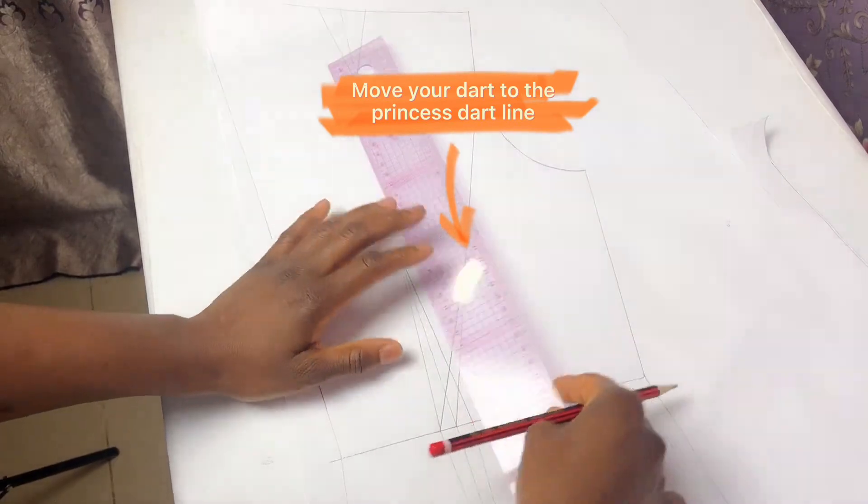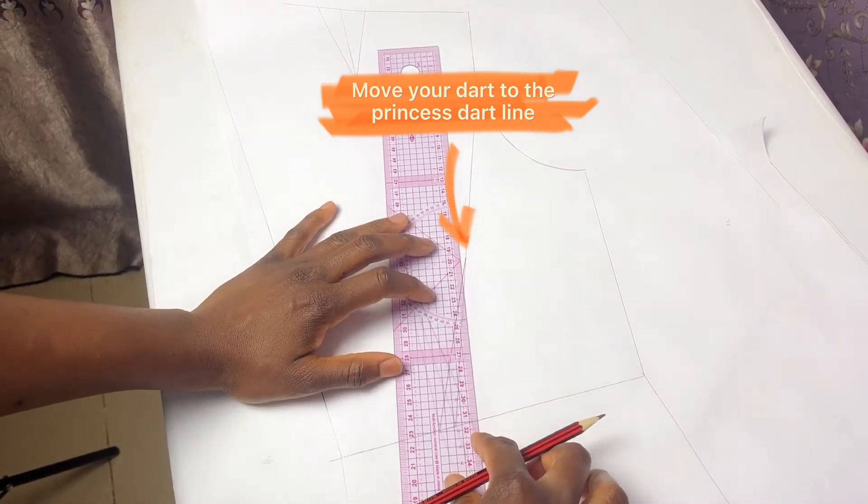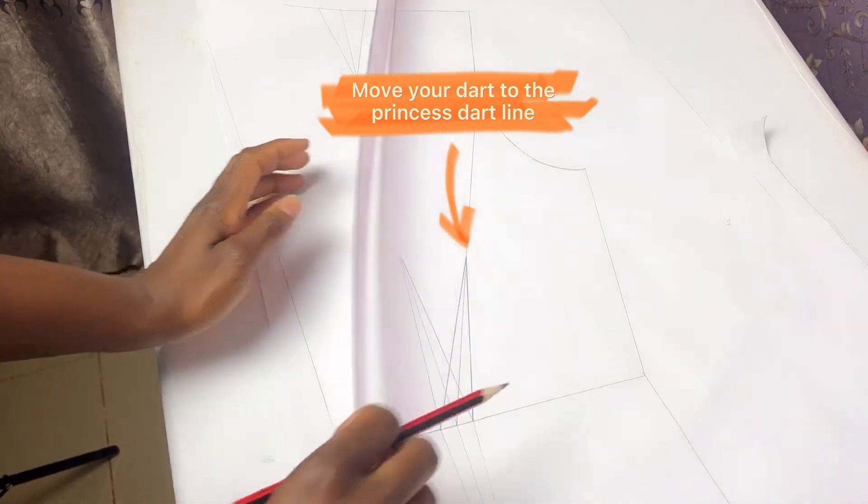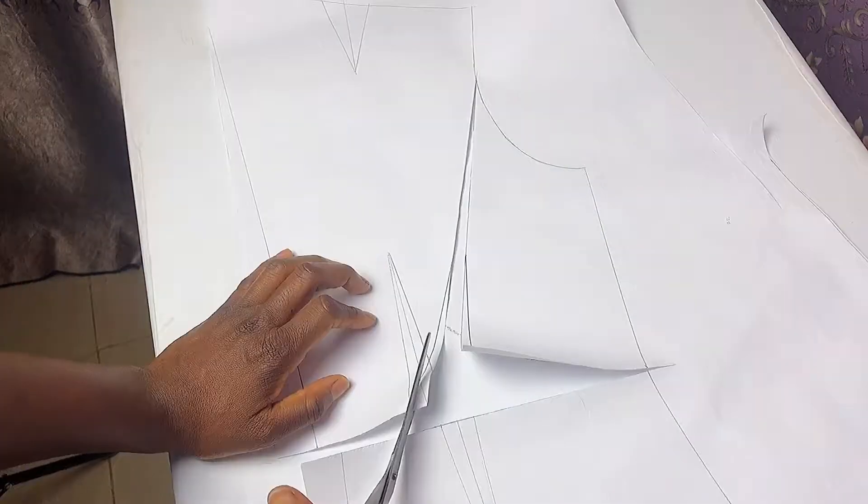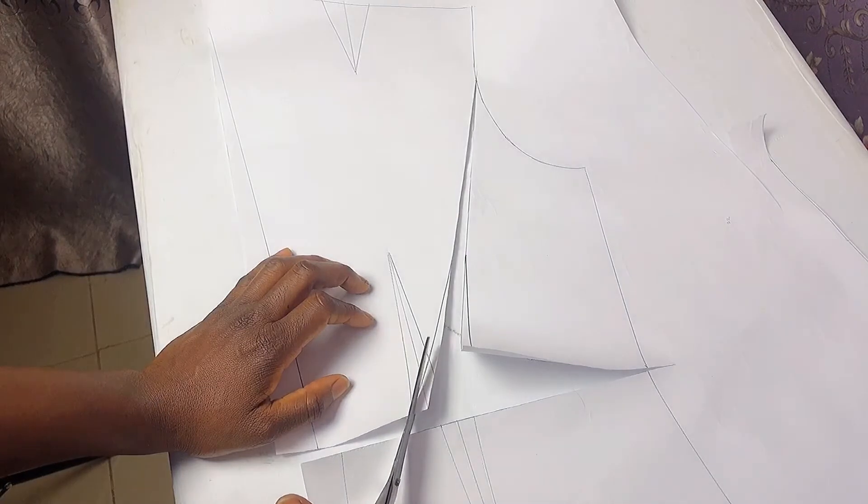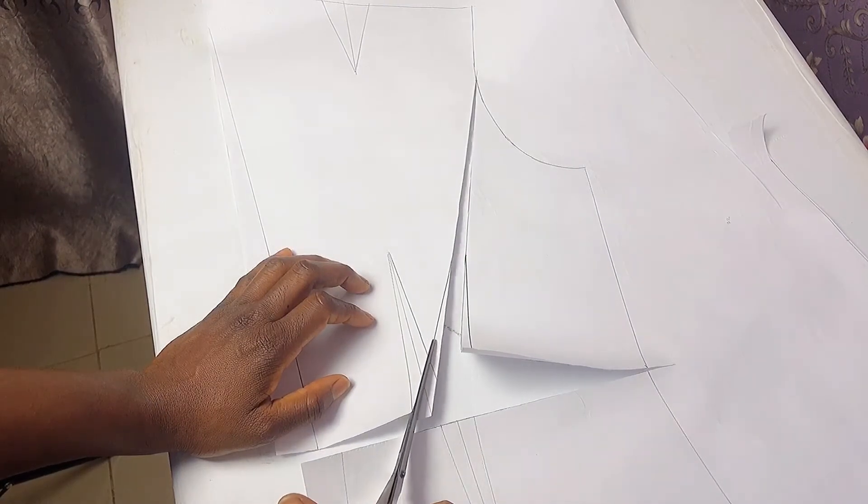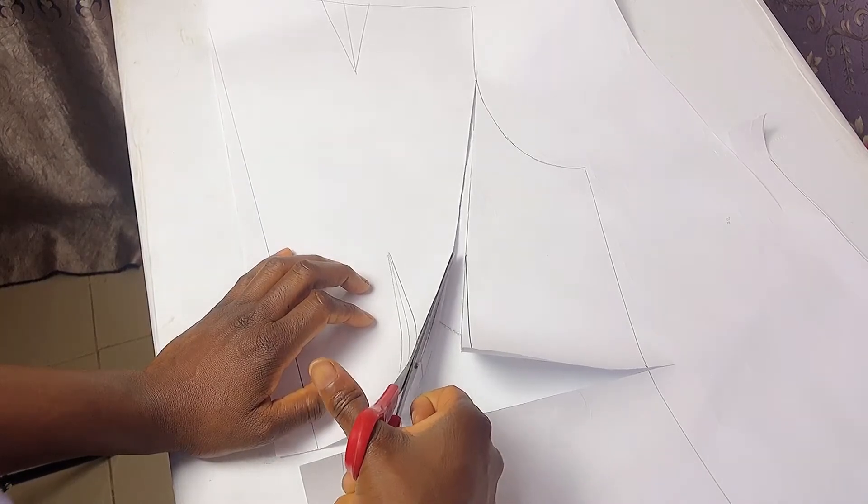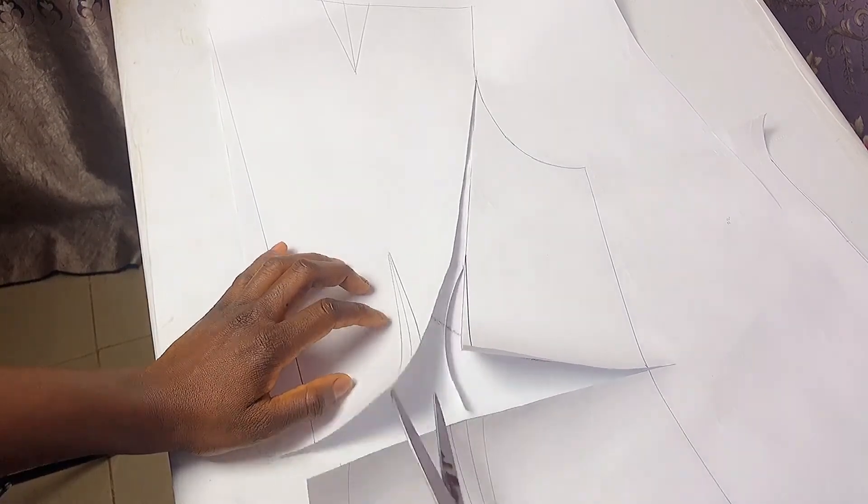After measuring the length of my dart I connected to the other dart leg. I just did this to move my dart to another point. The next thing I did was to slash the middle dart leg all the way to the armhole.